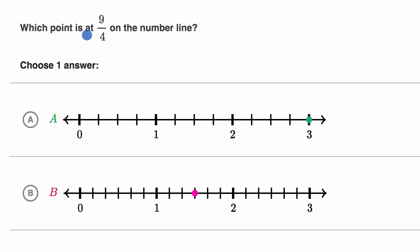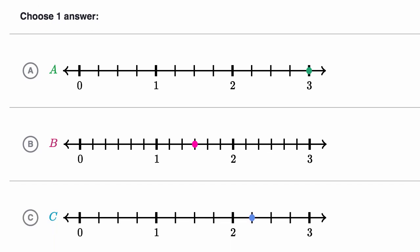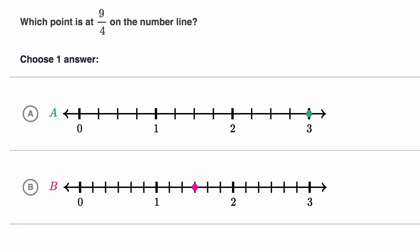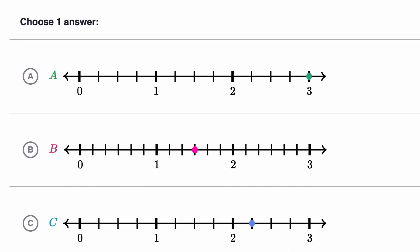For example, they say, which point is at 9 fourths on the number line? And they ask us to choose one answer, and we can look at the choices here. So which choice shows 9 fourths on the number line? Pause this video and see if you can pick that.